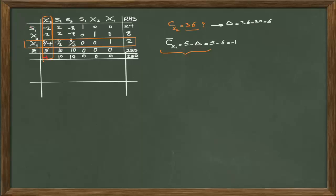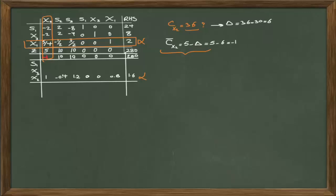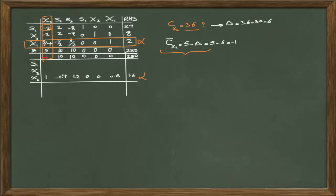To perform this operation, multiply the row related to X1 by 4/5 to generate a pivot value of 1, giving us the new row for X2. Using this pivot row, we manipulate the other rows so their values under X2 become 0. For example, to change negative 2 to 0, multiply the pivot row by 2 and add it to that row. Implementing these elementary row operations gives us updated values for the first and second rows.